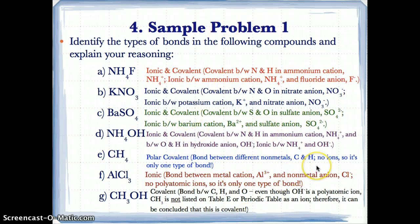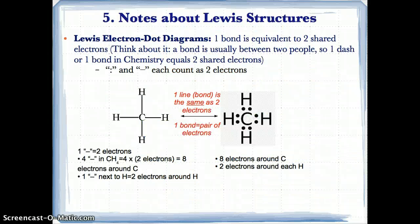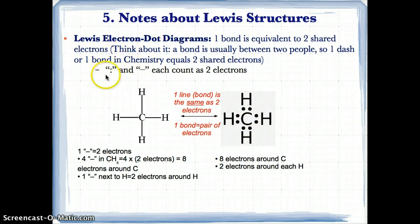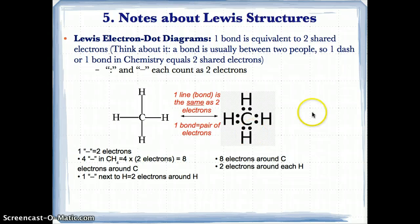In order for a substance to have both ionic and covalent bonds, you must have at least one polyatomic ion, and you must have at least one positive and one negative ion. Now let's talk about Lewis structures quickly. One bond is equivalent to two shared electrons. If you see two shared electrons between C and H, that's equivalent to one bond or one line. A bond is usually between two people, so one dash or one bond equals two shared electrons — one line equals one pair of electrons or two electrons.